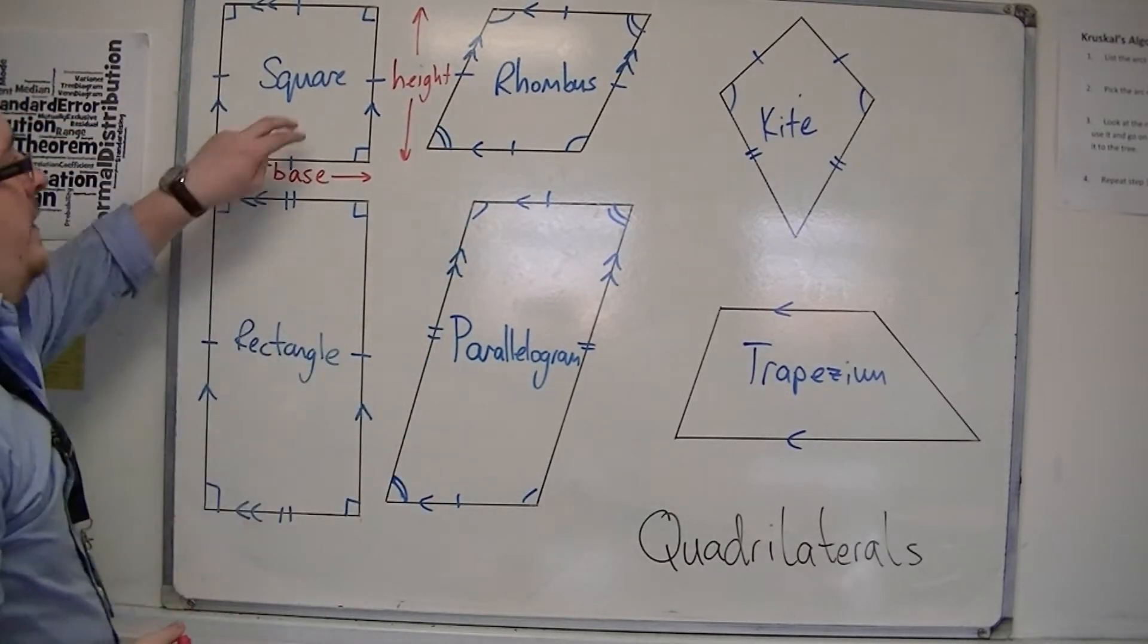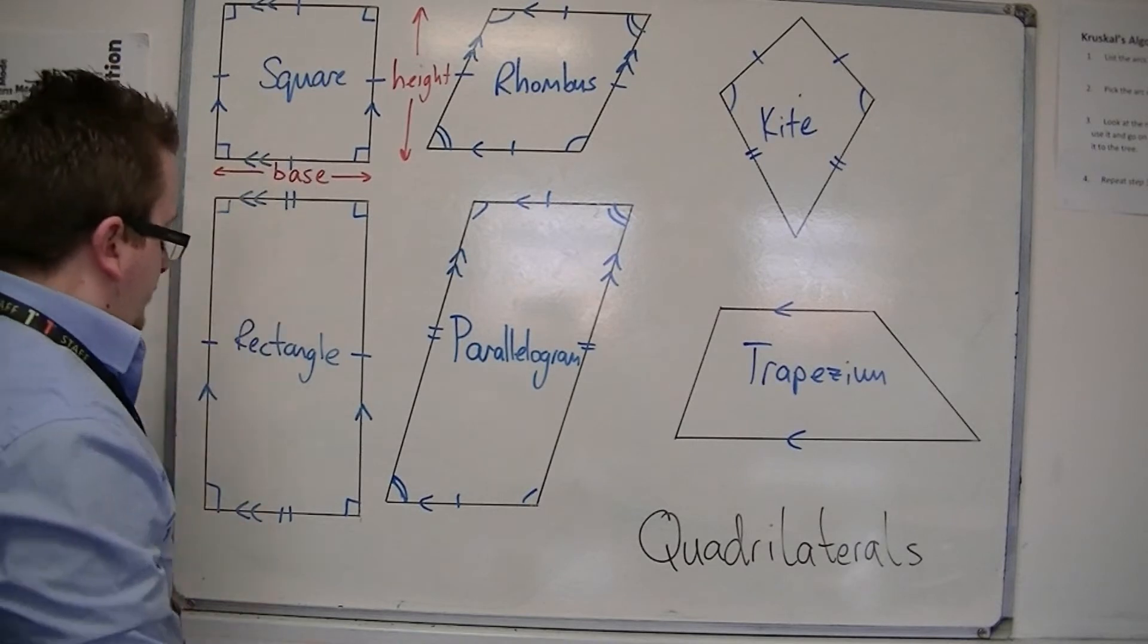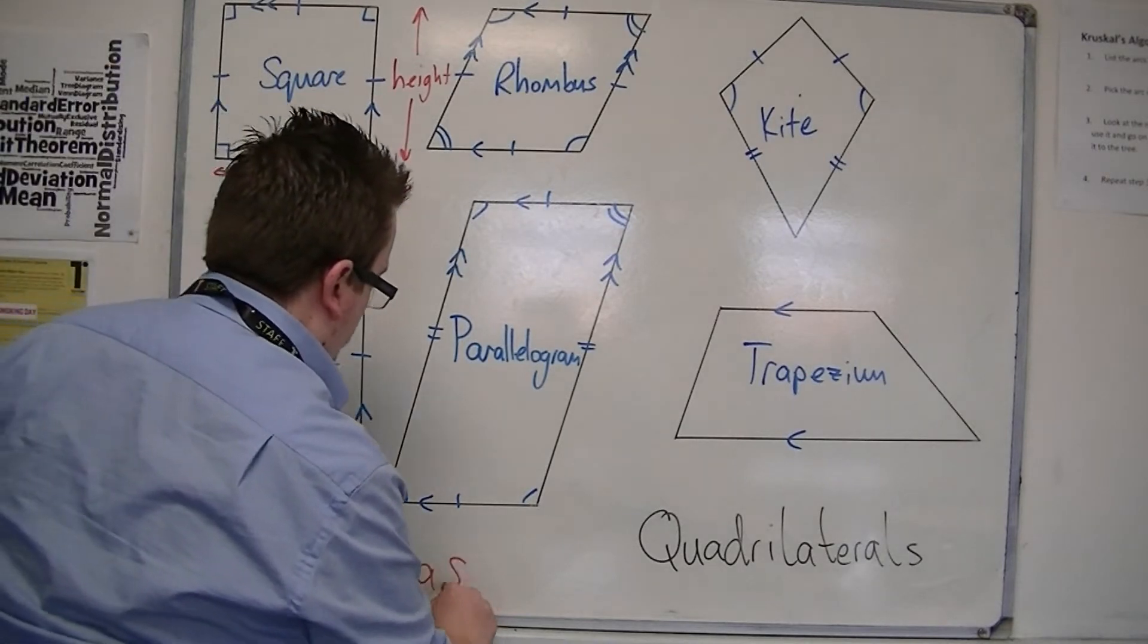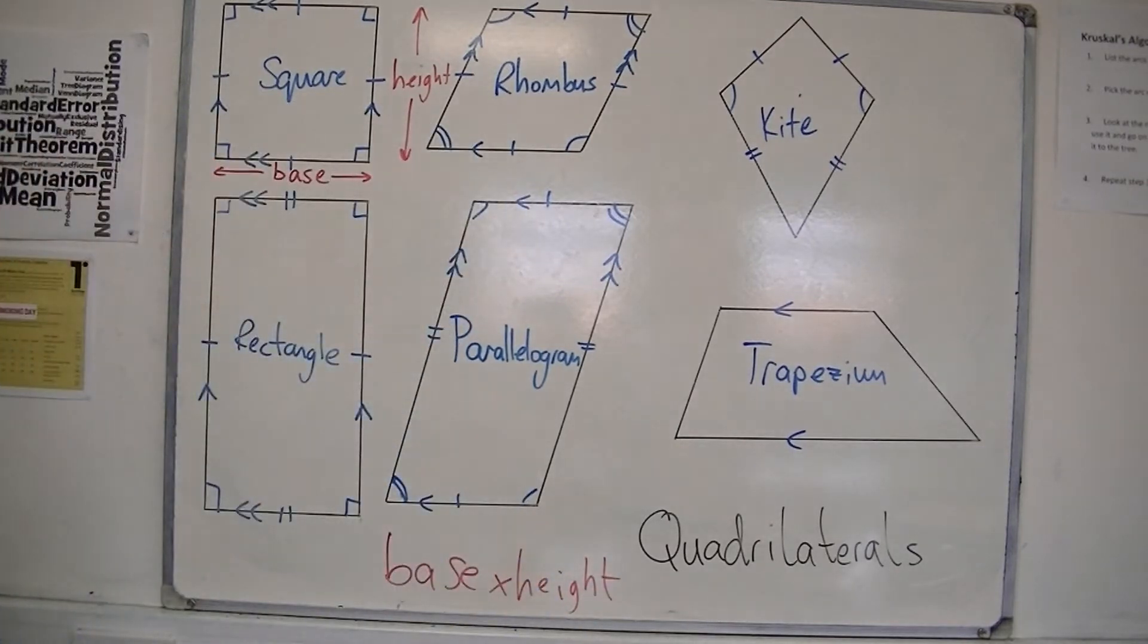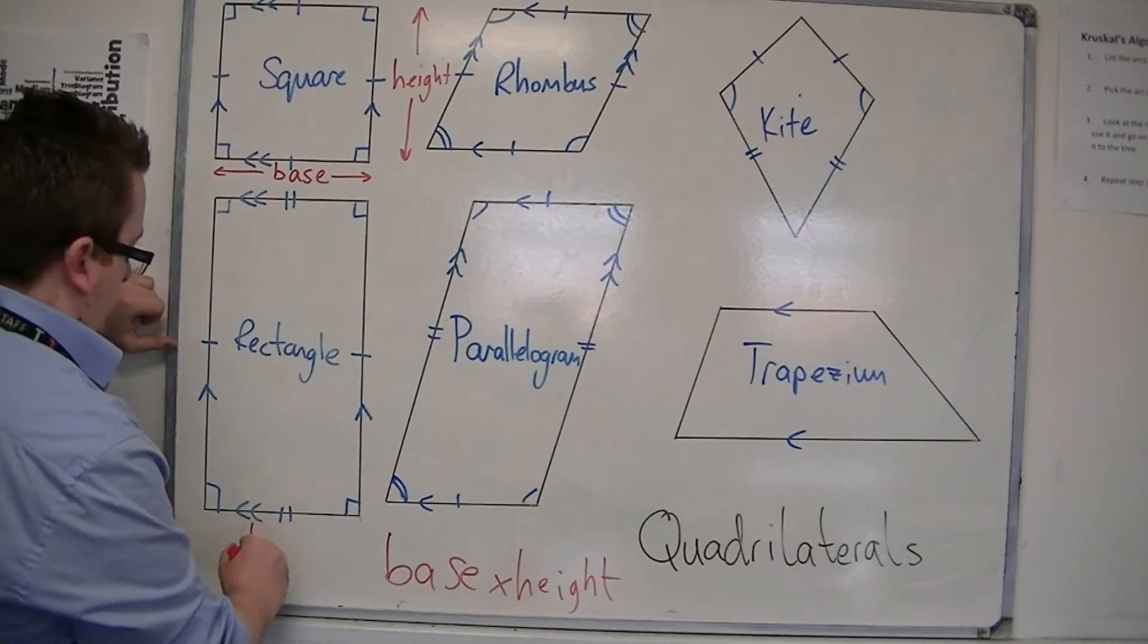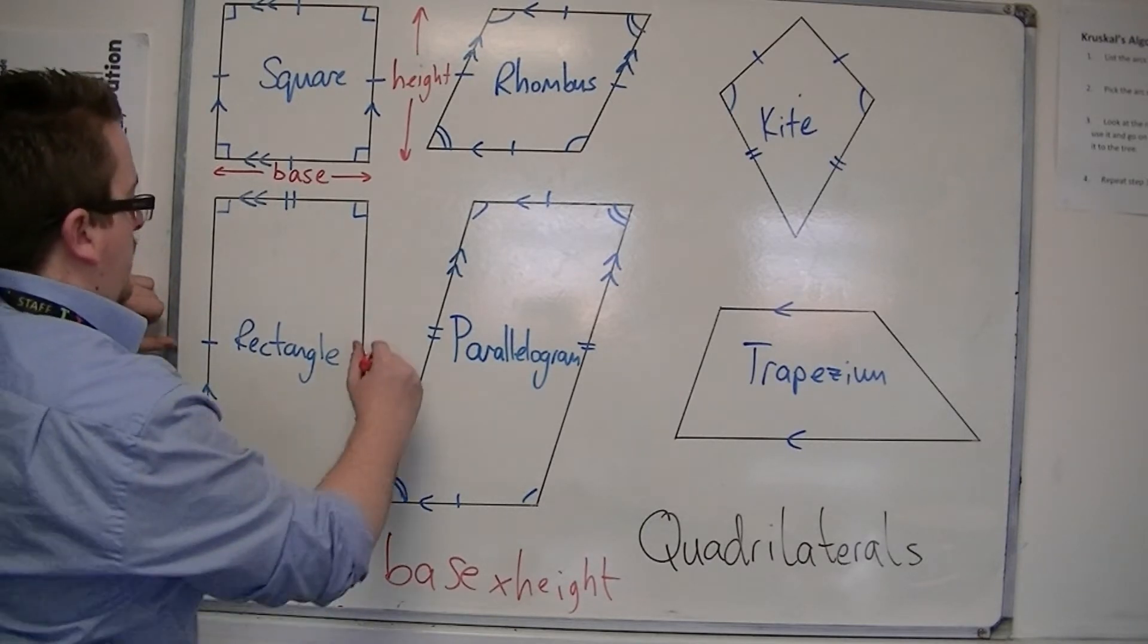So square, its area is base times height. Now, this is exactly the same for the rectangle. So base times height.